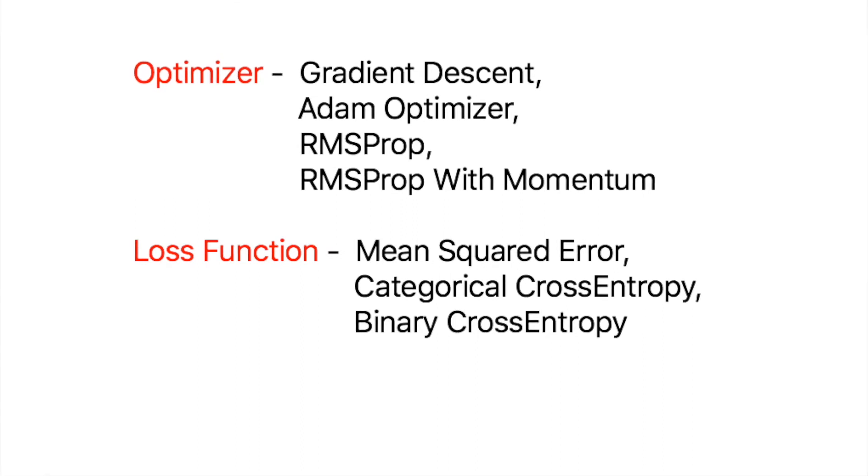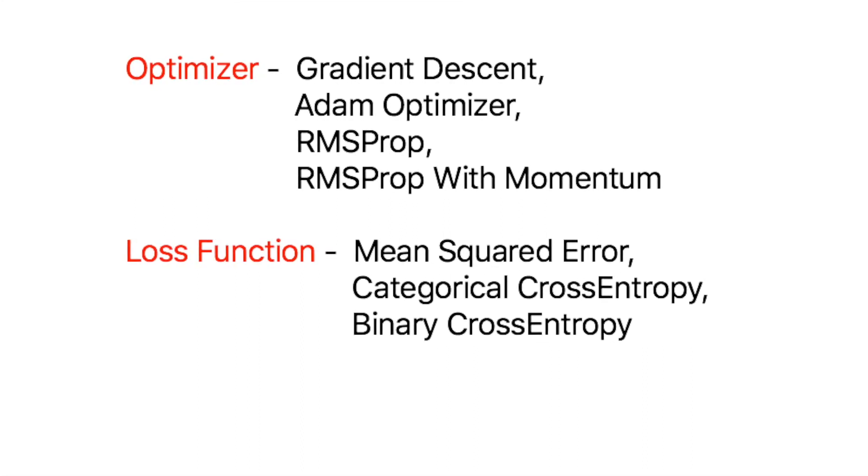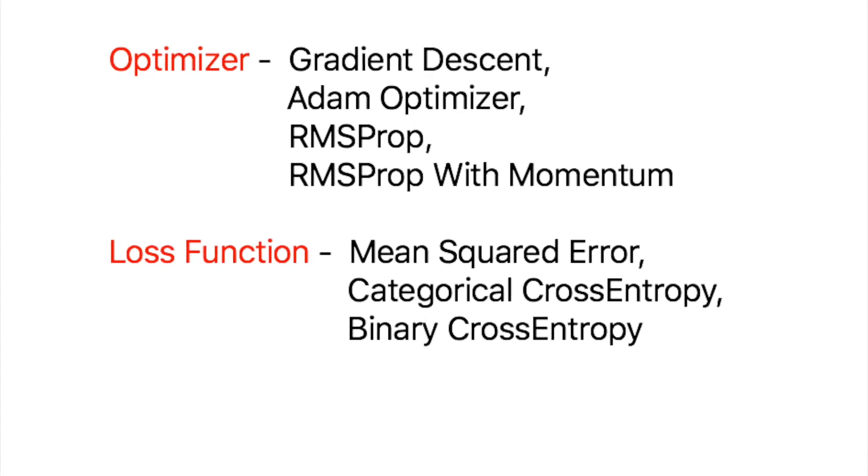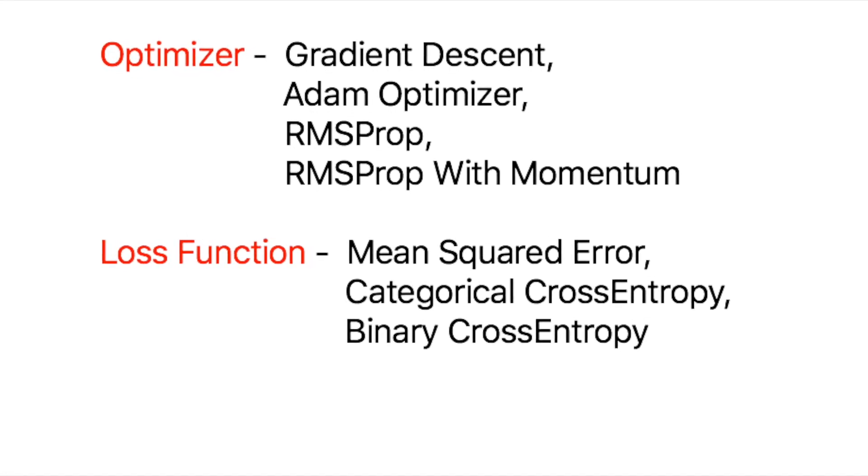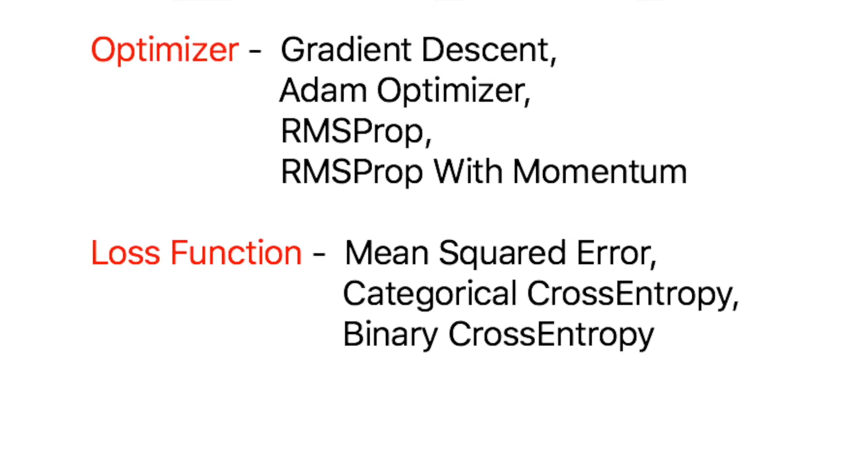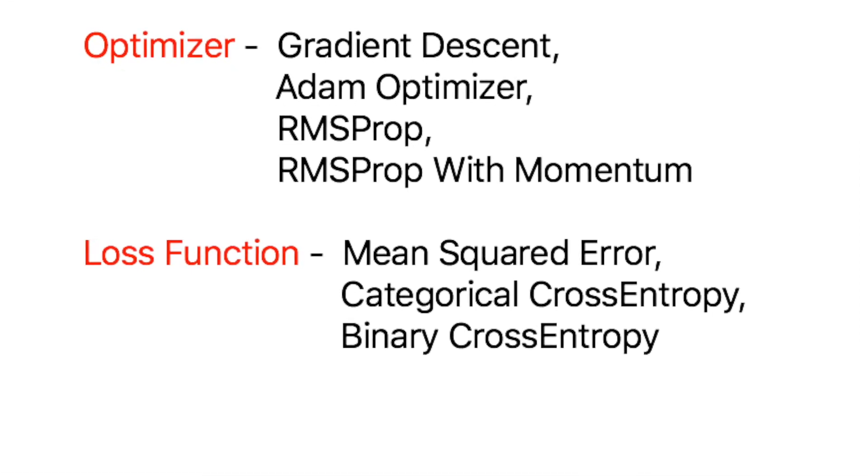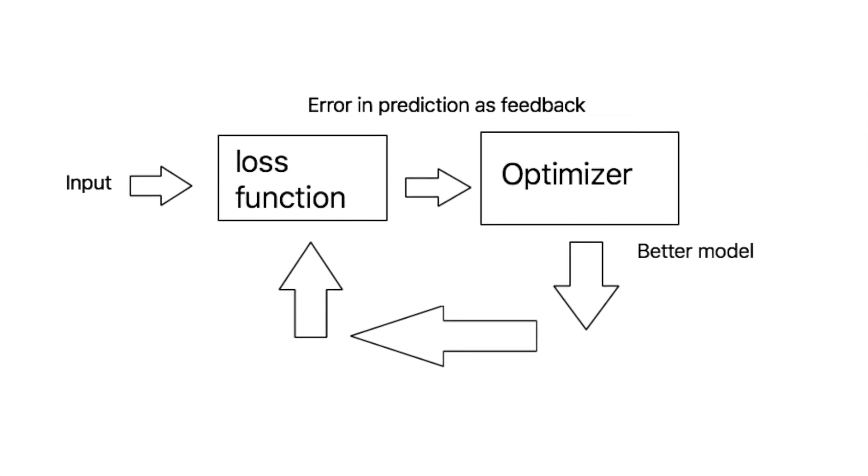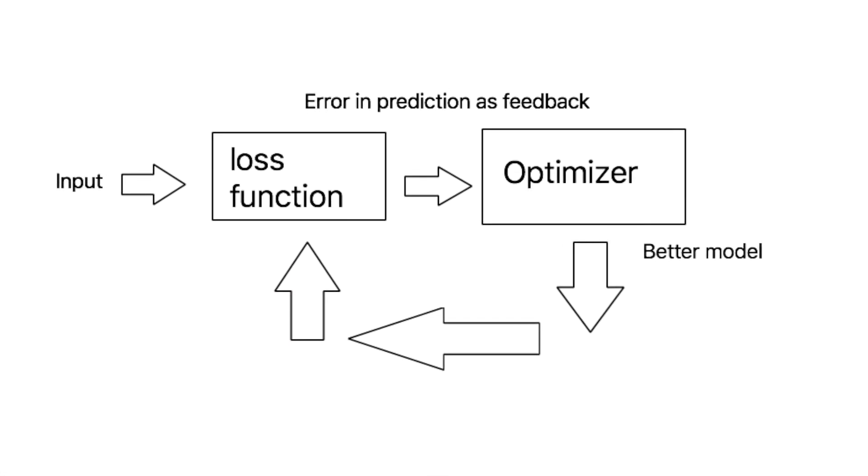There are different kinds of loss functions like mean squared error, binary cross entropy and categorical cross entropy. Since we are dealing with a multi-class classification problem, we are going to use the categorical cross entropy. What this effectively does is it computes the difference between the actual output and the output predicted by the model which in turn is the error in the prediction.